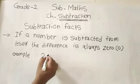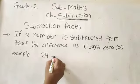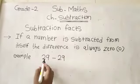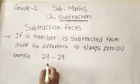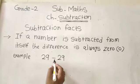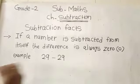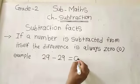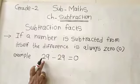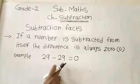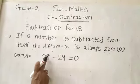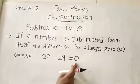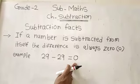Here, 29 minus 29 — the same number. Tell me the answer. 29 minus 29 is equal to 0. When a number is subtracted from itself, the same number subtracted from itself, we get the answer 0.